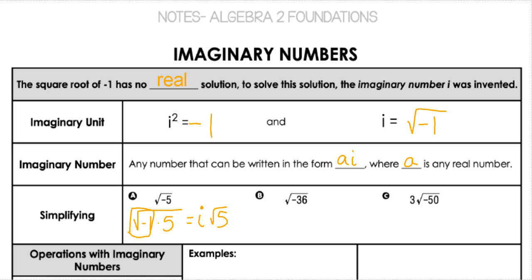For this one, we can split this apart into negative 1 times 36. We know that the square root of negative 1 is i, and the square root of 36 is 6. So when we have a simplified number where we don't need a root anymore in our answer, we put the number first. When there's still a root, it comes after the i.